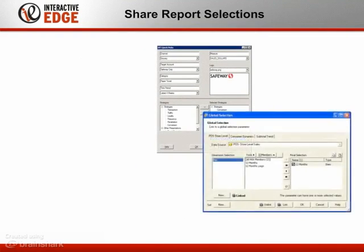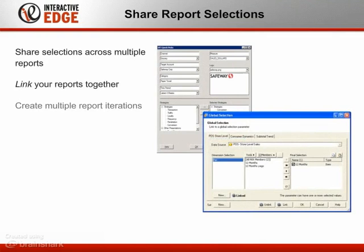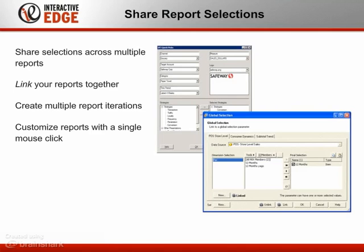The global selections allow users to share their chosen selections across multiple reports from one location. Link reports together and create multiple report iterations, and build customized reports for individual brands, stores, distribution centers, and more with a single mouse click.